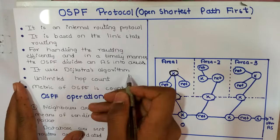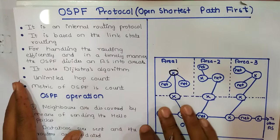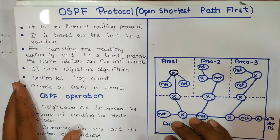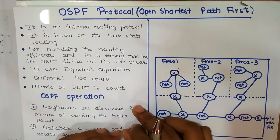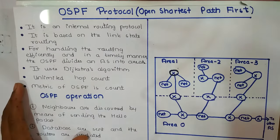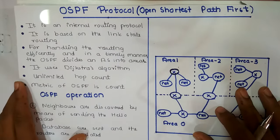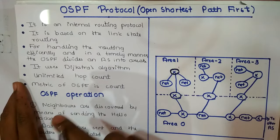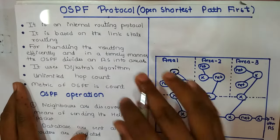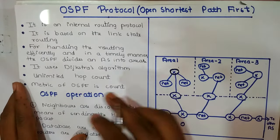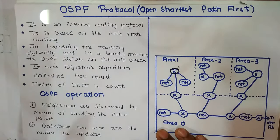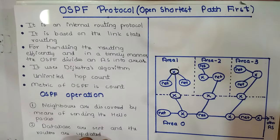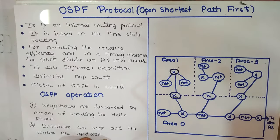OSPF uses Dijkstra's algorithm, which is used to find the shortest path in order to reach the destination. It has an unlimited hop count. The biggest advantage of OSPF with respect to RIP is this unlimited hop count, because RIP may only contain 15 hops. After the 15 hop count, RIP sends a message that the destination is unreachable.